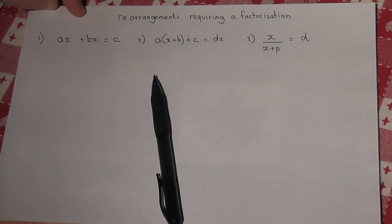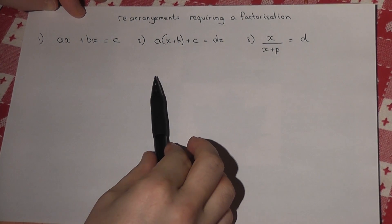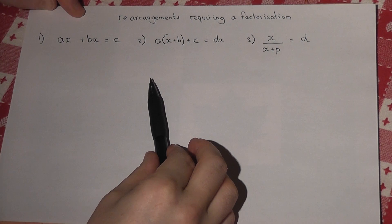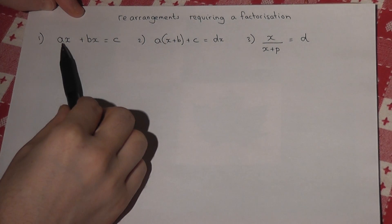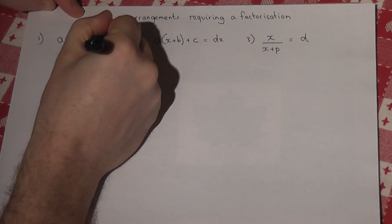This video looks at rearranging to make x the subject, but at the end we require factorization to solve. Now the first example shows this quite nicely: there's an ax plus bx, so there's a common factor of x.